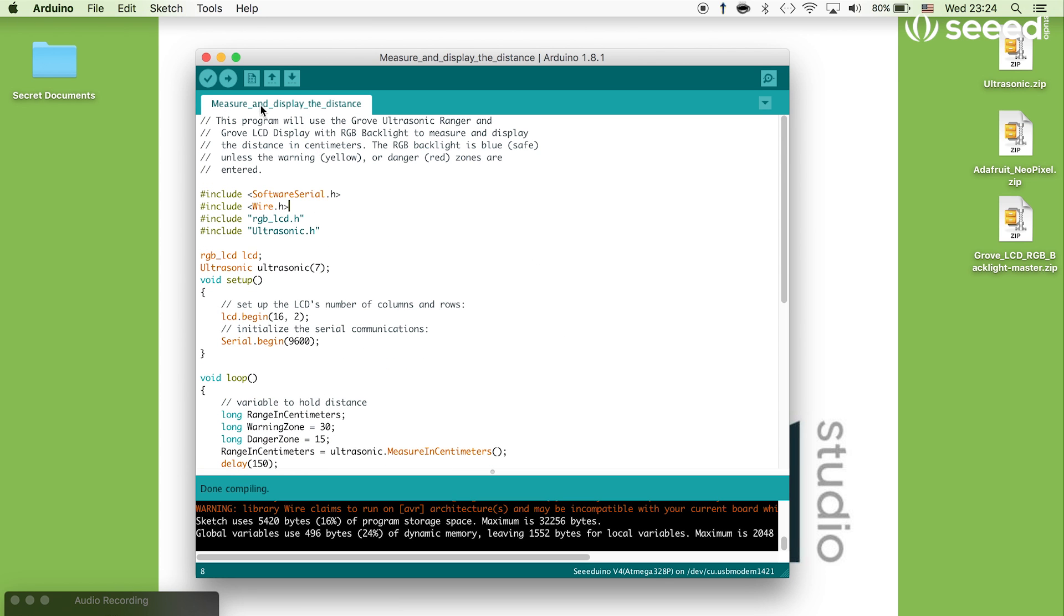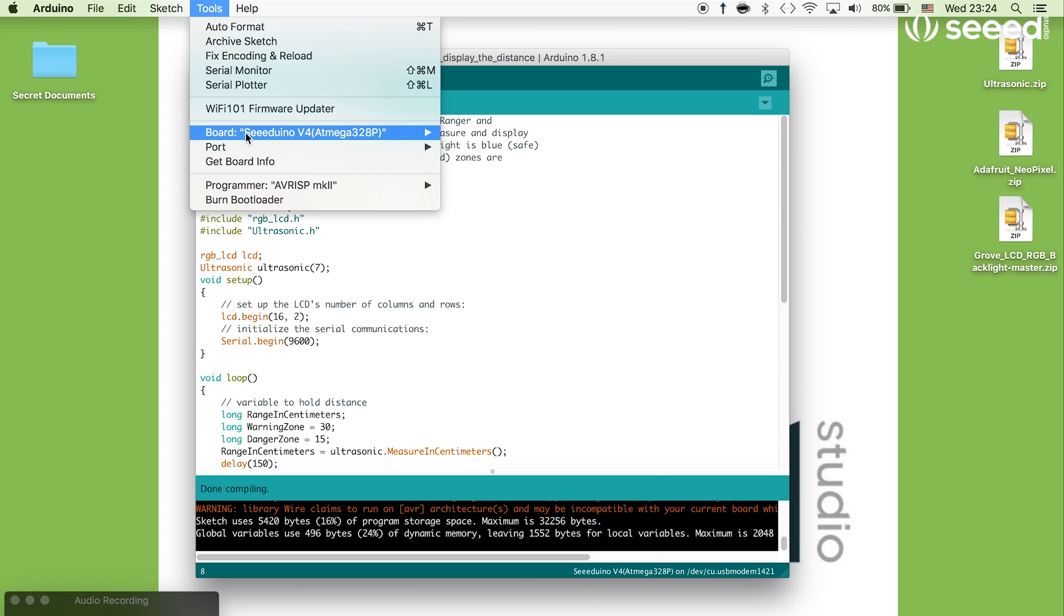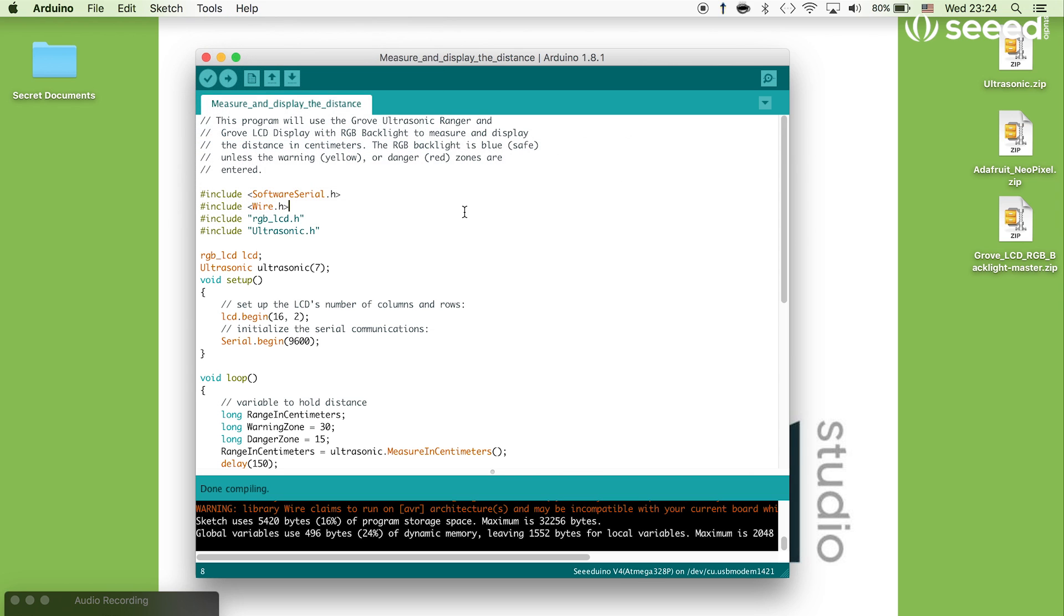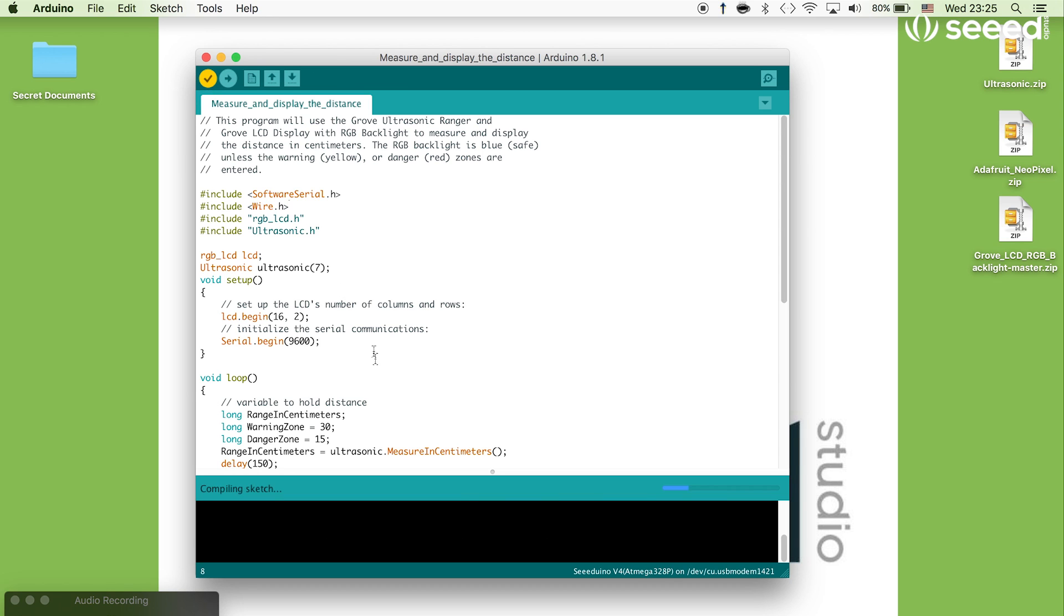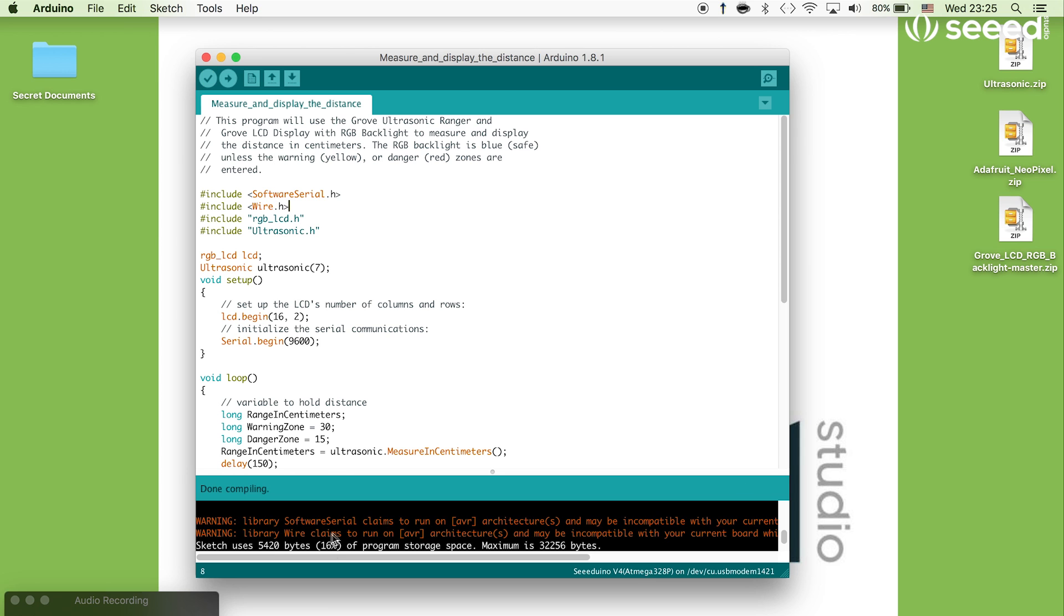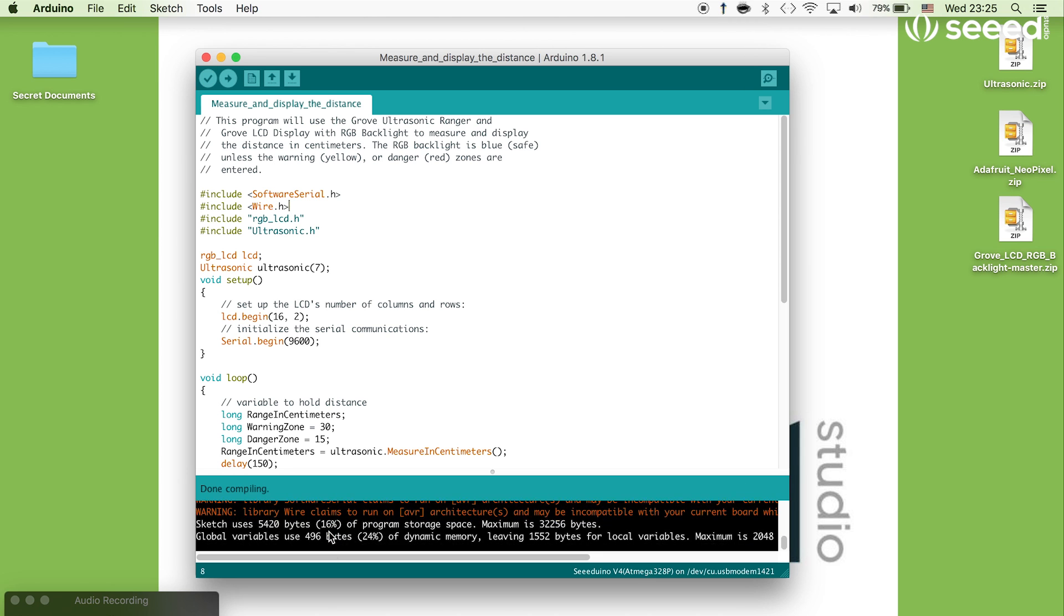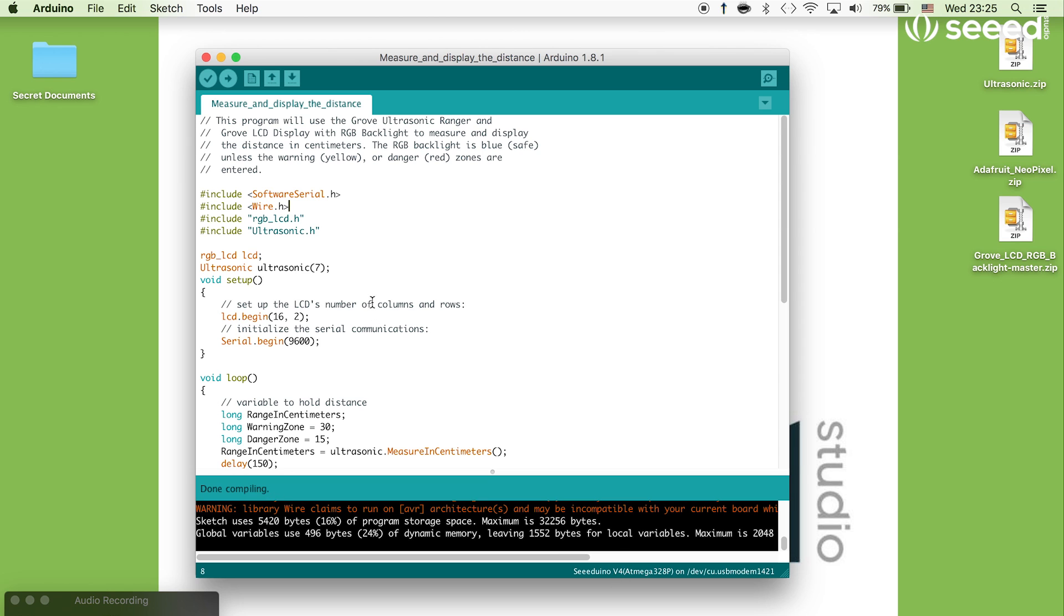Once you are prepared, make sure you select the correct board. You do this through tools board. We'll be using the Seeeduino and port. Make sure you connect to the correct port. In this case, we are actually just using no board in my little video here. But you normally will be connected and it will normally say USB modem one on the Mac. Hit verify to make sure that you have all your libraries. And I am done compiling. So it's working good for this board. And then you would hit upload once you connect your board. In this case, I would get an error. But let's see what it looks like when it's on a real board.